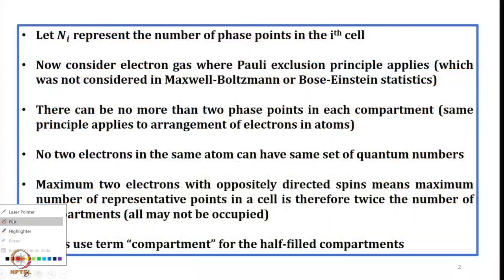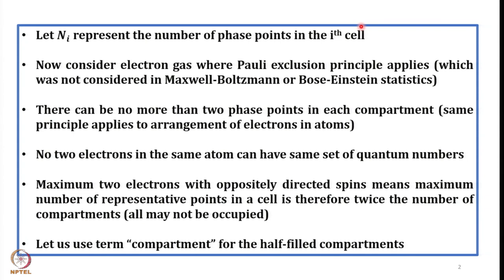In the way we described Bose-Einstein statistics, here also let us begin by considering Ni number of phase points in the ith cell. As usual we fix the number of phase points in the ith cell — these phase points can be electrons, molecules, or anything else. However, when specifically considering the electron gas, we now consider the electron gas where the Pauli exclusion principle applies, which was not considered in Maxwell-Boltzmann or Bose-Einstein statistics.